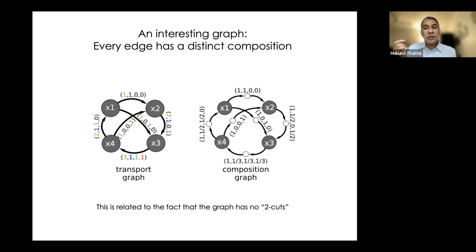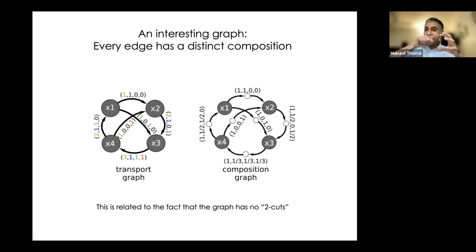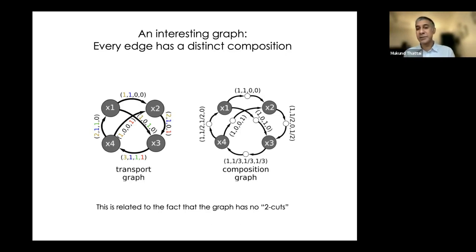This property — that no two edges have the same chemical composition — is not generic for all graphs, but a necessary and sufficient condition for it is that the graph has no two-cut. That's the first theorem I mentioned about cycle labeling.